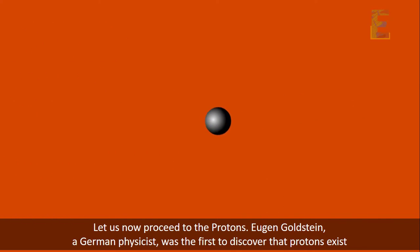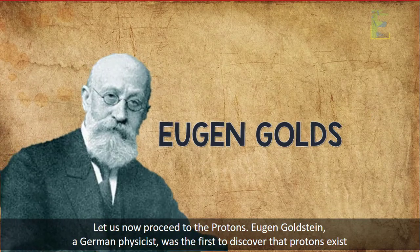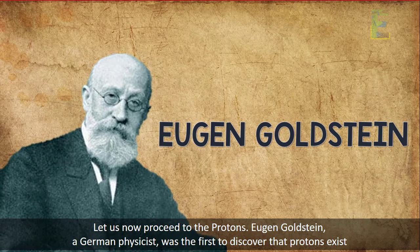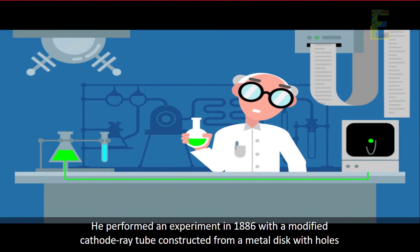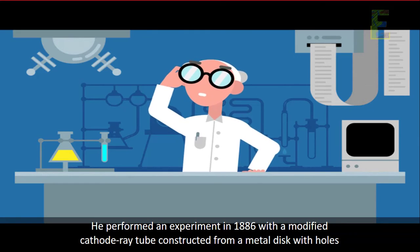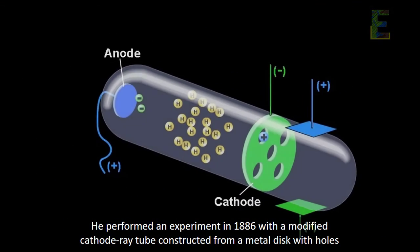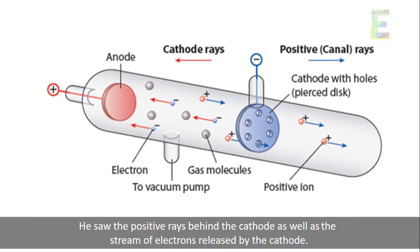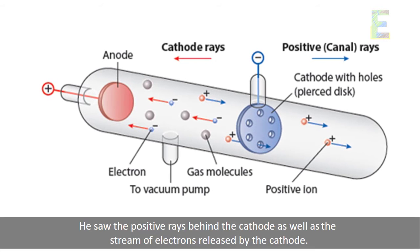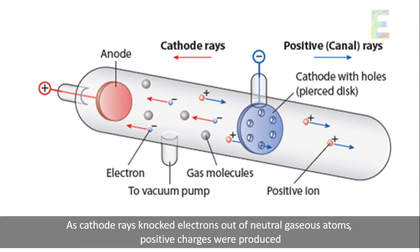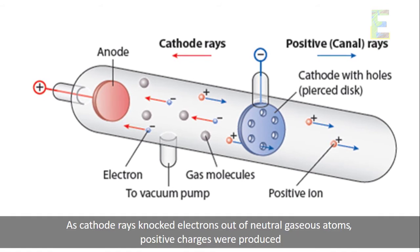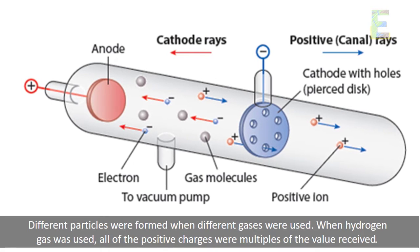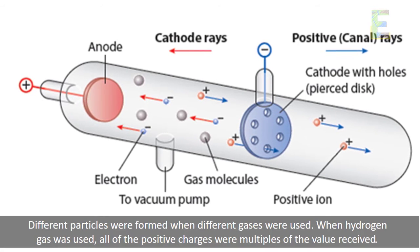Let us now proceed to the protons. Eugene Goldstein, a German physicist, was the first to discover that protons exist. He performed an experiment in 1886 with a modified cathode ray tube constructed from a metal disc with holes. He saw the positive rays behind the cathode as well as the stream of electrons released by the cathode. As cathode rays knocked electrons out of neutral gaseous atoms, positive charges were produced. Different particles were formed when different gases were used.